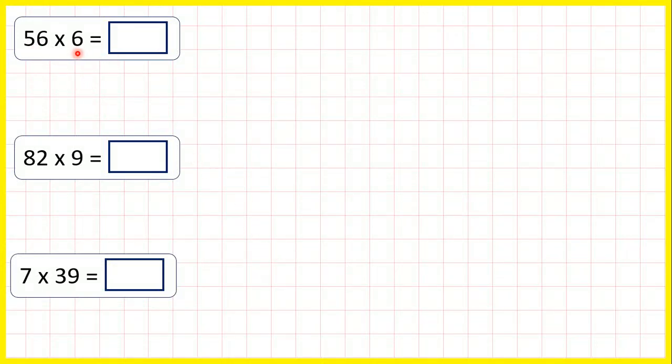56 times 6. We can set this out as a short multiplication, and we start by multiplying our ones digit. So 6 times 6 is 36, but because that's a two-digit number, we need to write 36 as 3 6, with the first digit above the next place value column along.